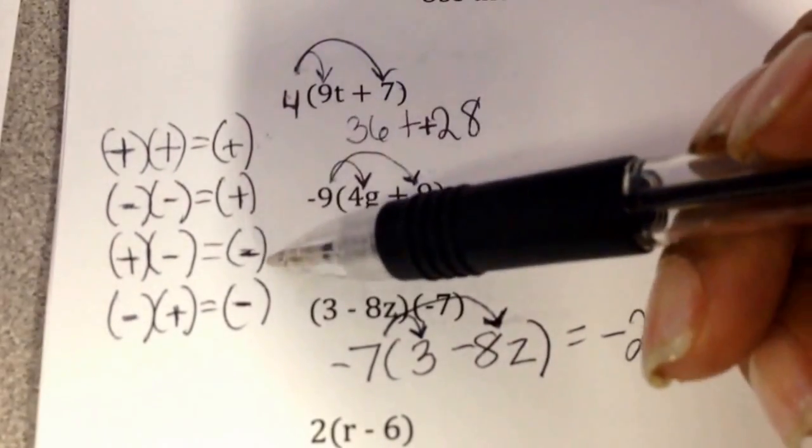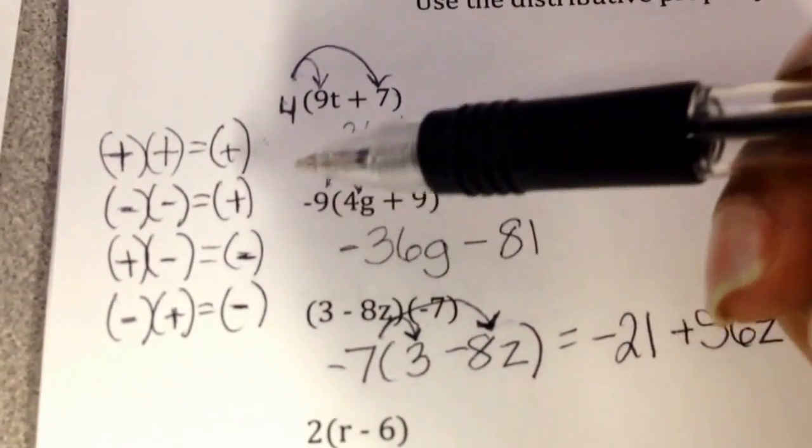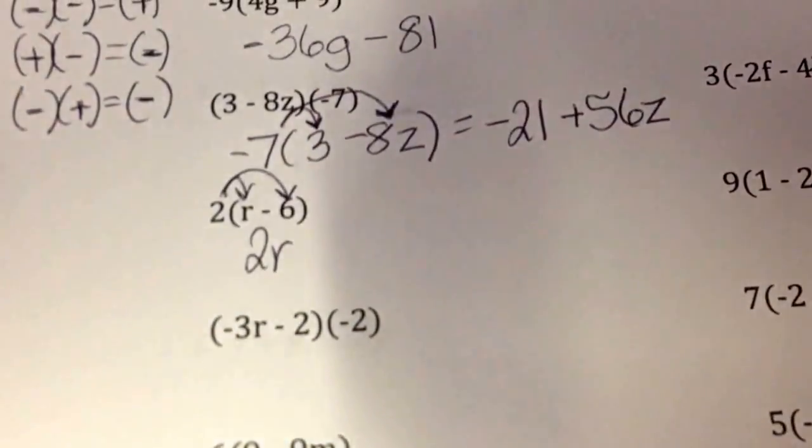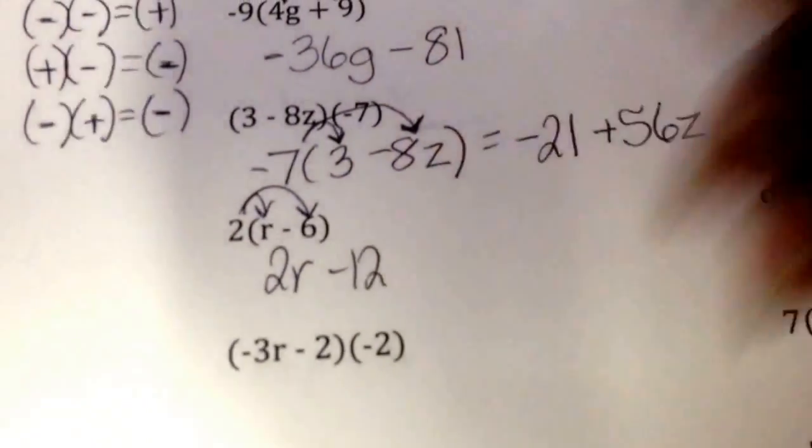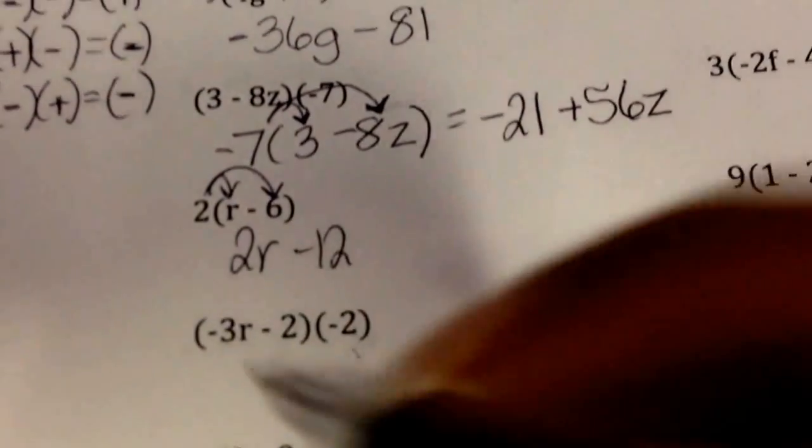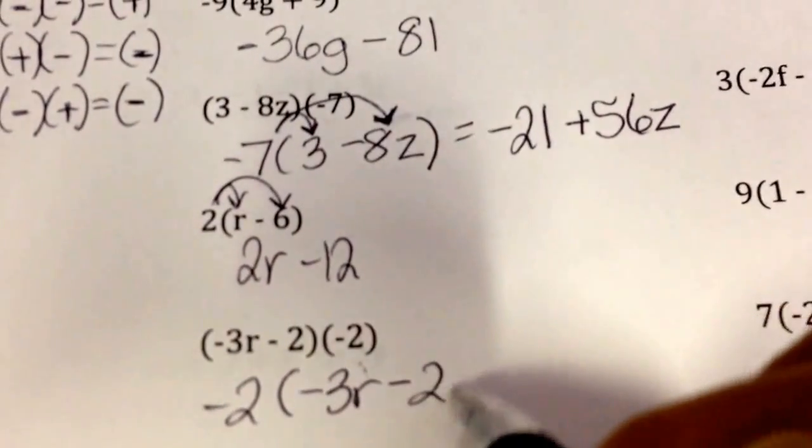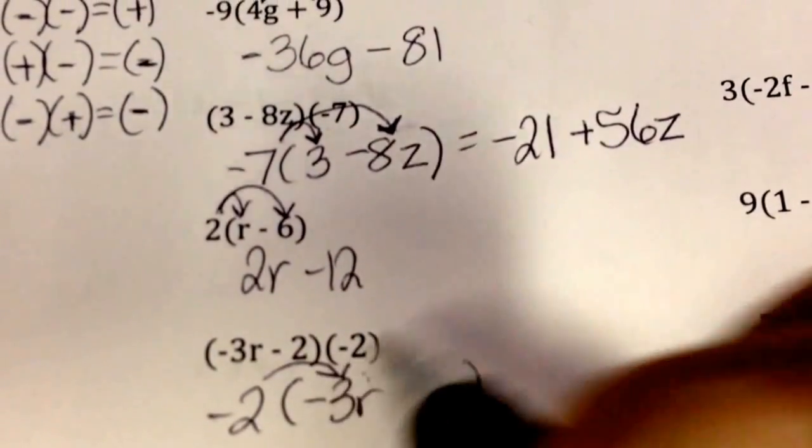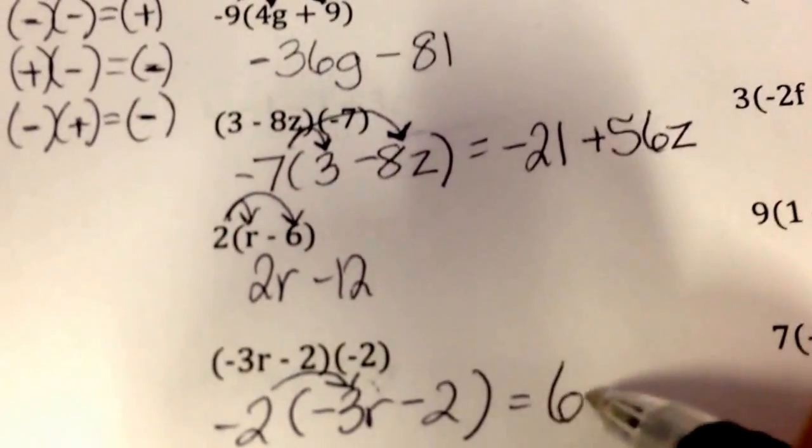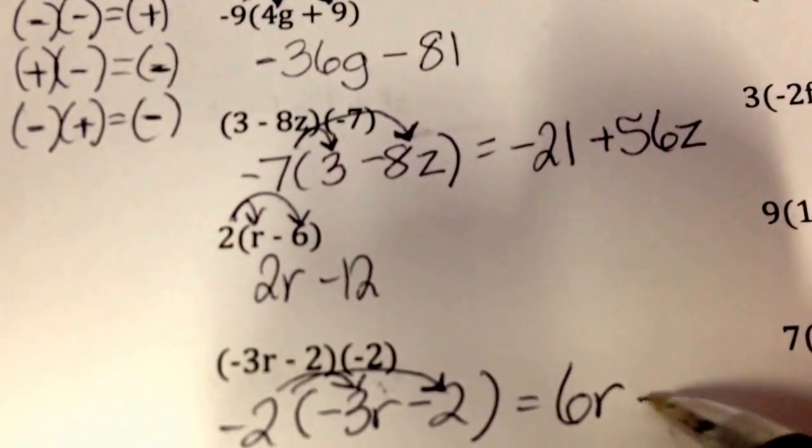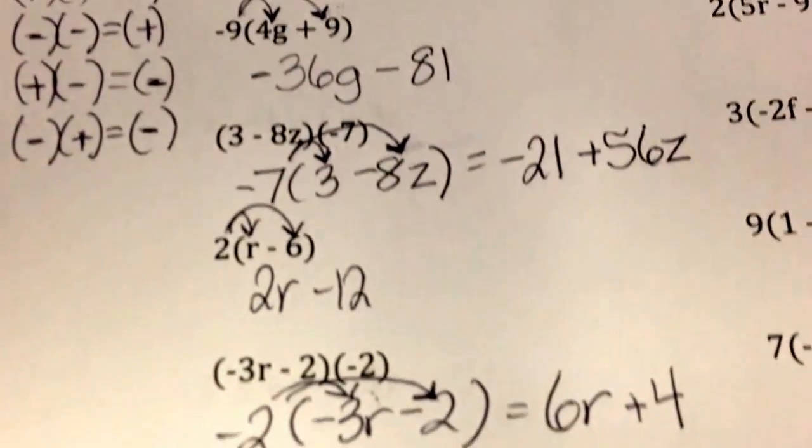Let's look at the next two: 2 times r is 2r, 2 times negative 6 is negative 12. Another rewrite: negative 2 times negative 3r. A negative times a negative, that's a positive. Negative times a negative is positive 4. Hopefully this helps with your homework tonight.